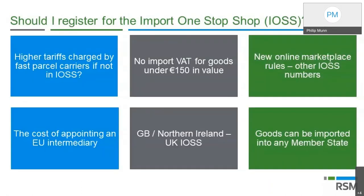The Import One-Stop Shop is a voluntary scheme. You can choose to use it to account for local VAT, use the DAP plus model as Ian explained, or ask your customer to pay the import VAT and duty prior to receiving the goods. Those are the typical options if you choose not to have an EU distribution model. On the question of fast parcel carrier tariffs, it is quite often the case that a fast parcel carrier will not adopt the most VAT and duty efficient means of getting goods into the EU, potentially incurring higher tariffs than would be the case if registered under the Import One-Stop Shop.